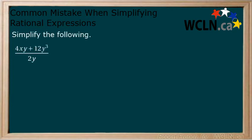When simplifying these types of questions, there are two methods that can be used. First, we will use both to simplify the following expression. First method: Factor out the common factor of 4y from the numerator to get 4y multiplied by x plus 3y squared all over 2y.